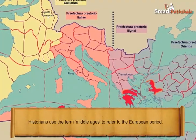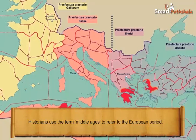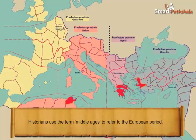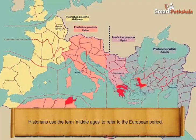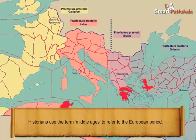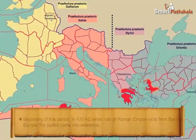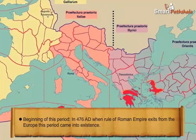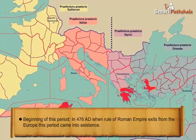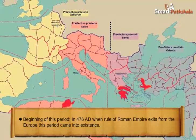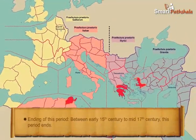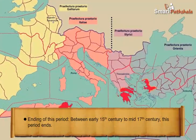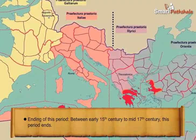This period tells us that the society in which we are living is more civilized and advanced than in past years. Historians use the term Middle Ages to refer to the European period. This period began in 476 AD when the rule of the Roman Empire exited from Europe, and ended between the early 15th century and the mid-17th century.